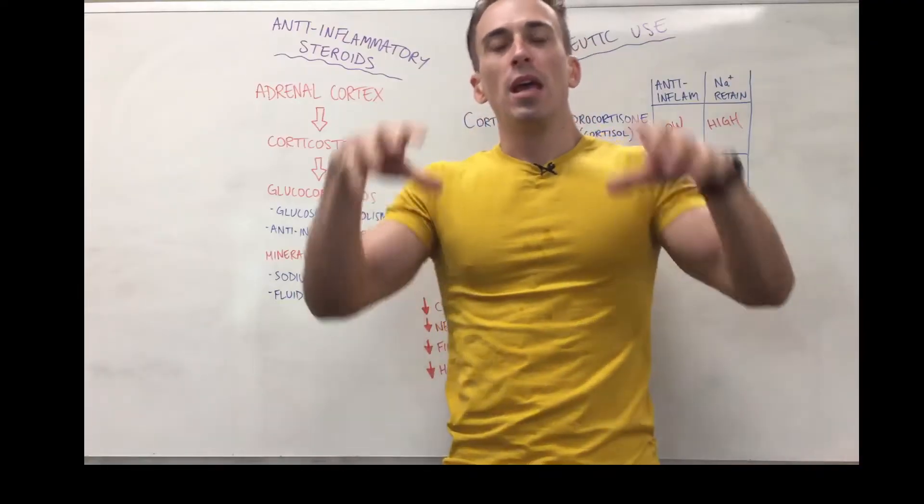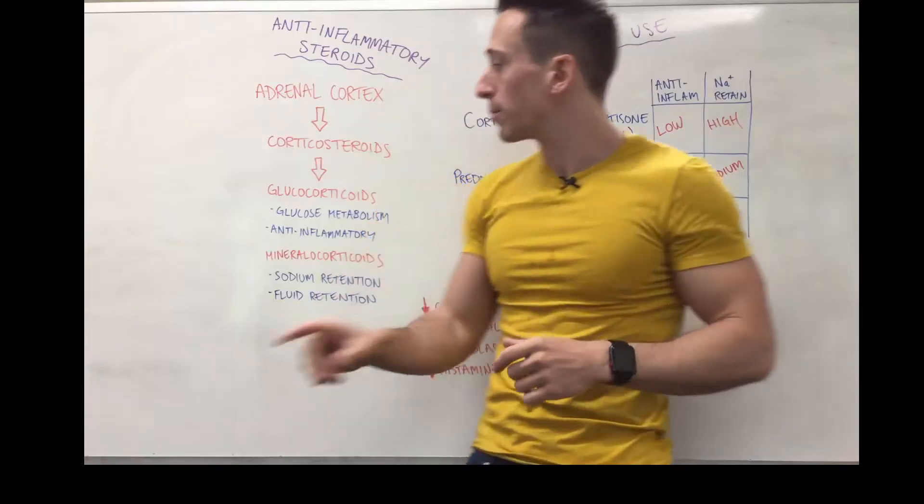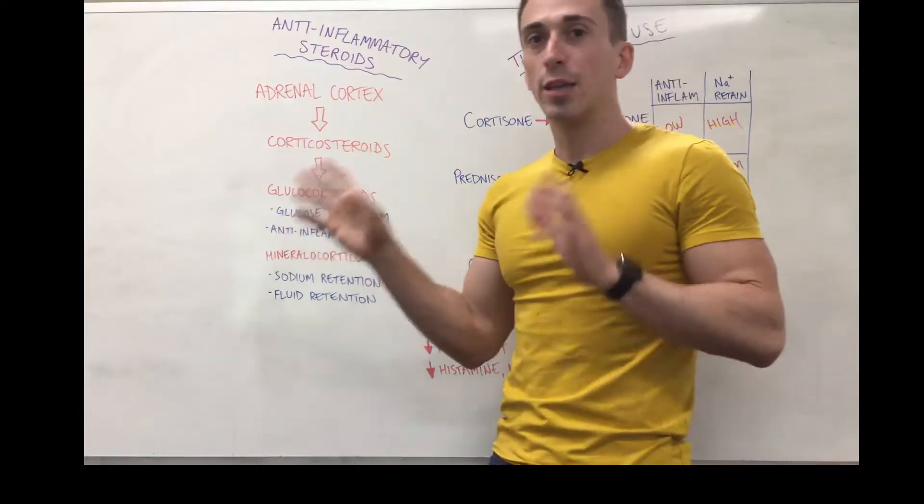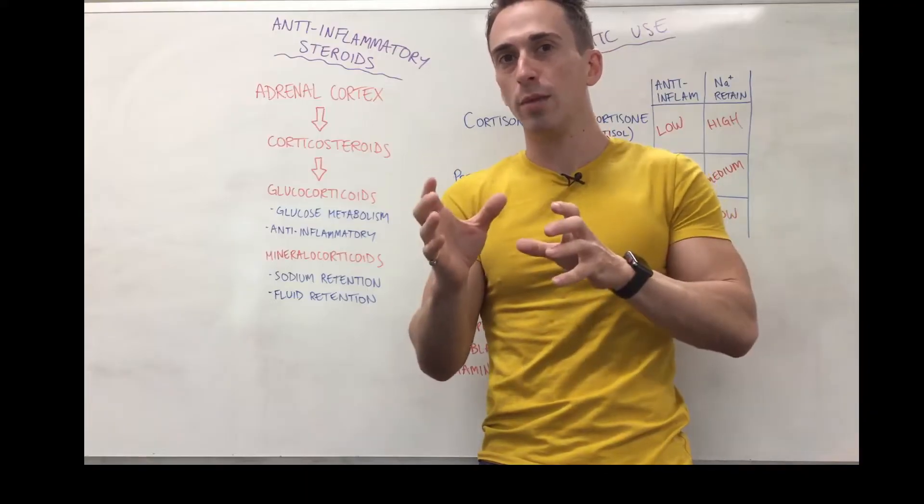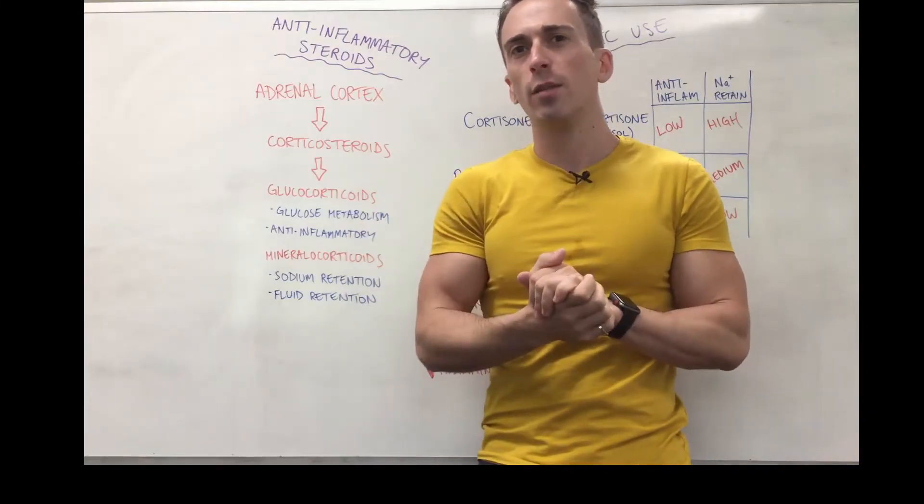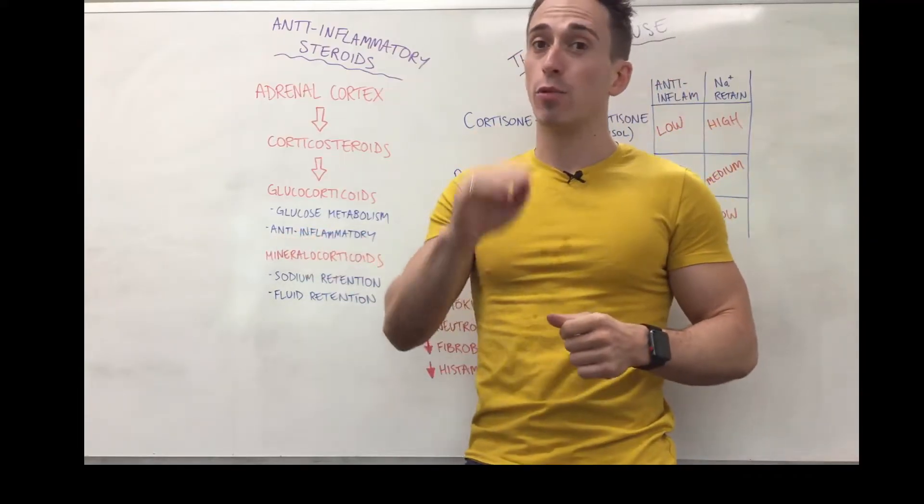So remember your adrenal glands? They sit on top of your kidneys and they produce corticosteroids, and there's two major types. There's glucocorticoids, and they're called glucocorticoids because of their role in glucose metabolism. Remember what it did was it increased the amount of glucose available in the bloodstream, and it has a potent anti-inflammatory and immunosuppressive role.